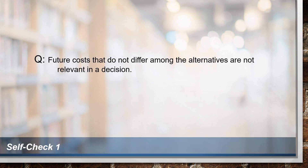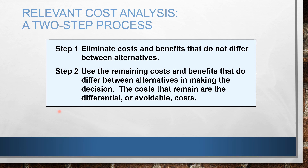Self-check number one: Future costs that do not differ among the alternatives are not relevant in a decision. True or false? Now let's use a two-step process in analyzing whether a cost is relevant or not. Step one: eliminate costs and benefits that do not differ between alternatives — those that are exactly the same amount and present in both alternatives. Step two: use the remaining costs and benefits that do differ between alternatives in making the decision. These remaining costs are differential or avoidable costs.